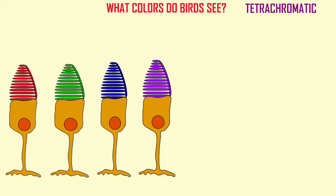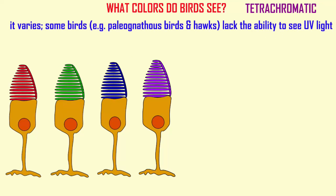How birds see color varies. The most primitive birds alive today, like the flightless ostrich and rhea, and other groups such as hawks, do not see ultraviolet light. It seems that UV perception was not something that the earliest birds could perceive.